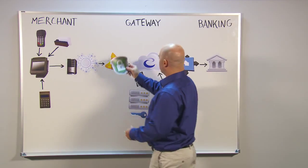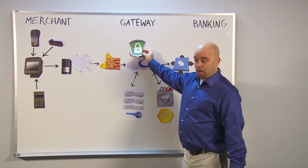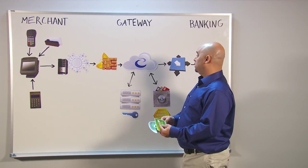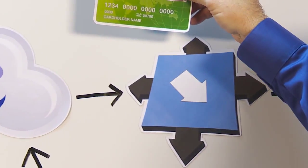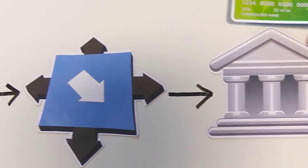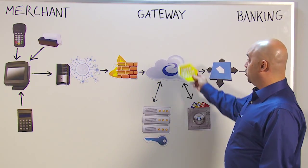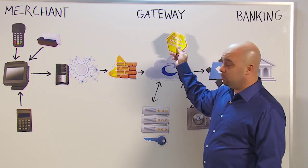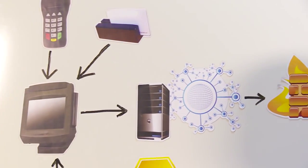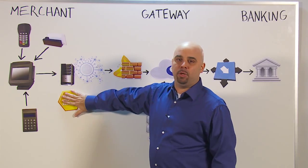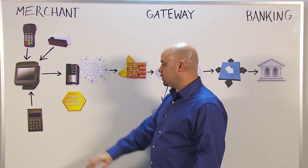At that point it will be decrypted and then processed in its raw form over to the bank. If Transaction Vault is in place, that information will be tokenized and the token data will be sent back to the server where it can then be referenced and used for future purposes.